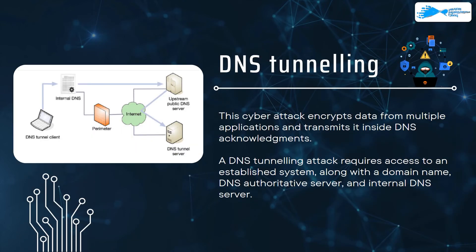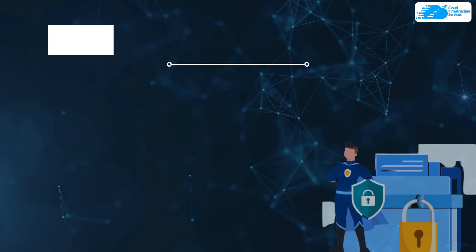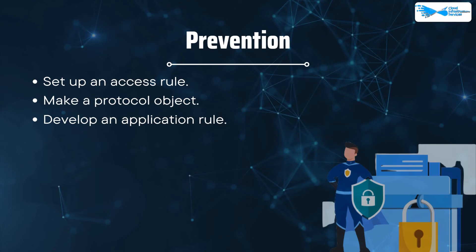Number seven on our list is DNS tunneling. This cyber attack encrypts data from multiple applications and transmits it inside DNS acknowledgments. A DNS tunneling attack requires access to an established system, a domain name, a DNS authoritative server, and an internal DNS server. To protect against this, you need to set up an access rule, create a protocol object, and develop an application rule.